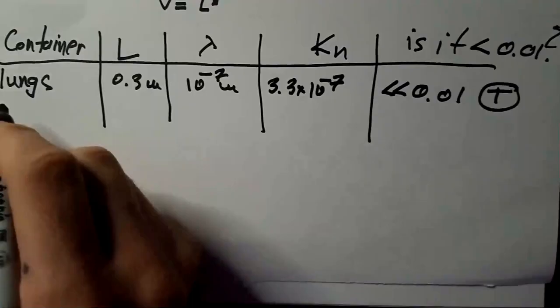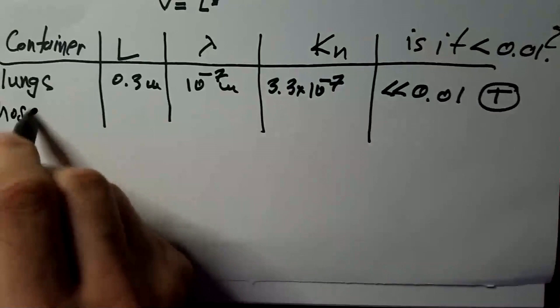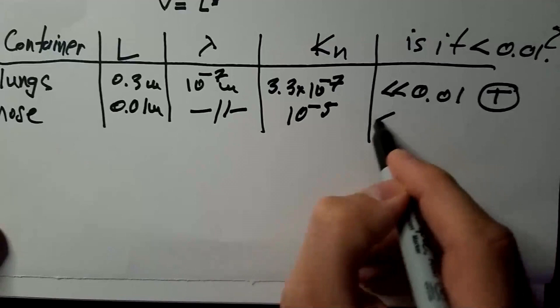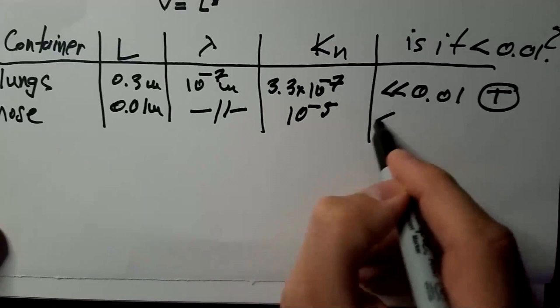Now, let's say, somebody can say, yeah, but you breathe through nose. So, if I measure the nostril of my nose, it's about 1 centimeter. It's about 1 centimeter, which is 0.01 meter. This is the same, and then we get 10 to the power minus 5, still way, way smaller than 0.01. We are good to go.